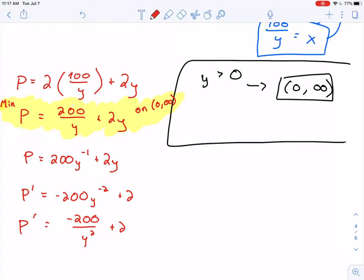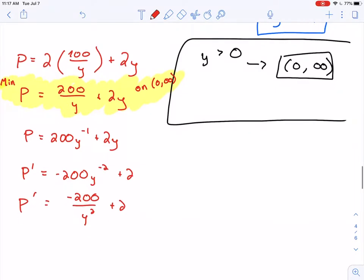So here is my derivative. Let's see. How should I go about this? Well, I want to find places where P prime is equal to 0 and places where P prime does not exist.